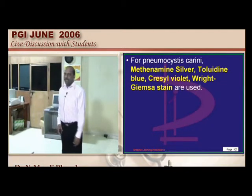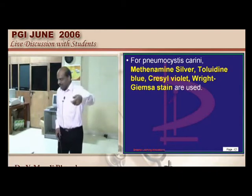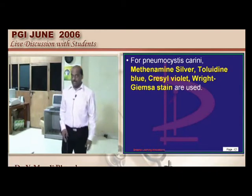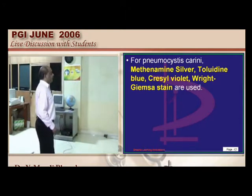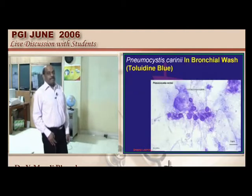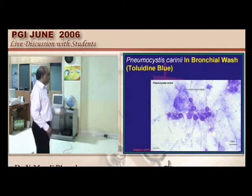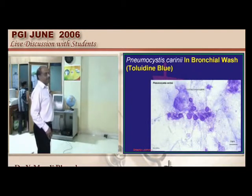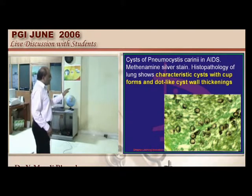For Pneumocystis carinii pneumonia, if you have bronchoalveolar lavage fluid, you can use methenamine silver stain, toluidine blue, chrysile violet, and the Reed-Gem stain. A classical example is a bronchial wash from an HIV-positive individual where toluidine blue is used to identify Pneumocystis carinii cysts, showing dark-light thickening of the cysts.